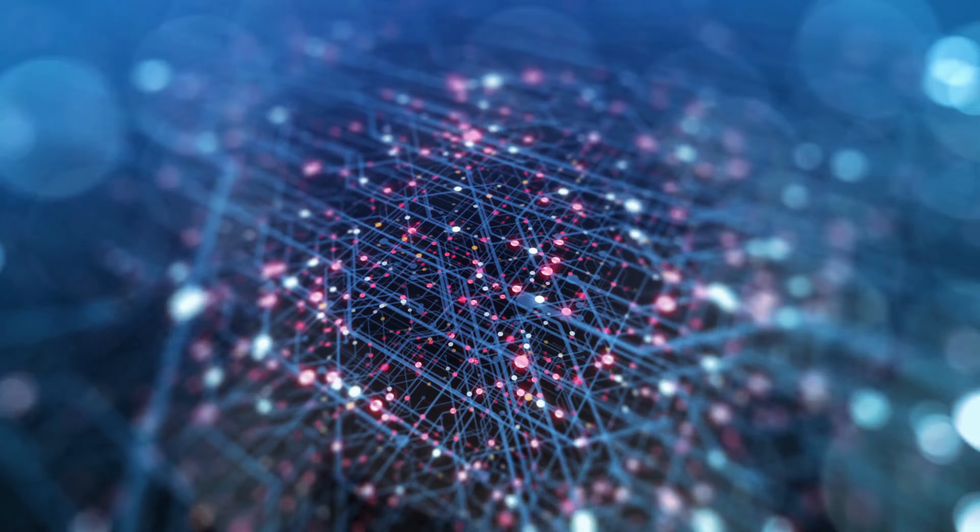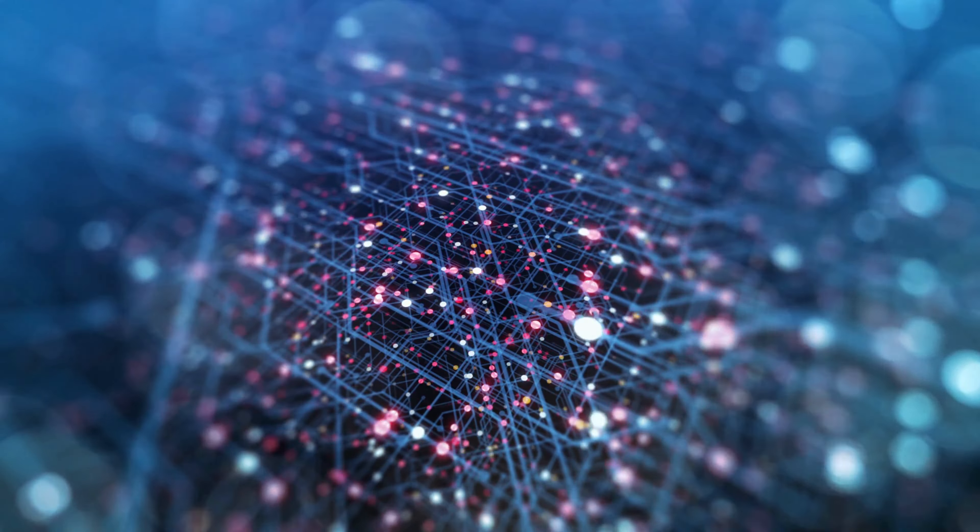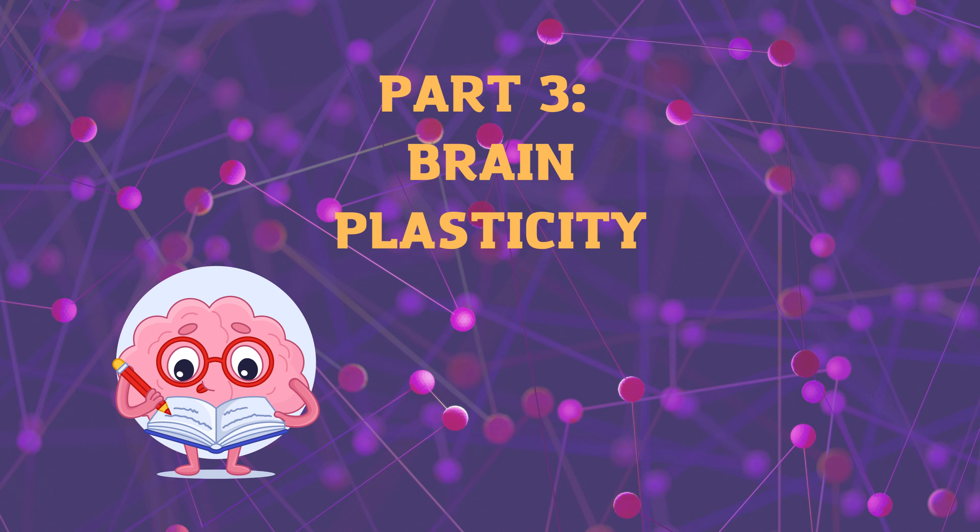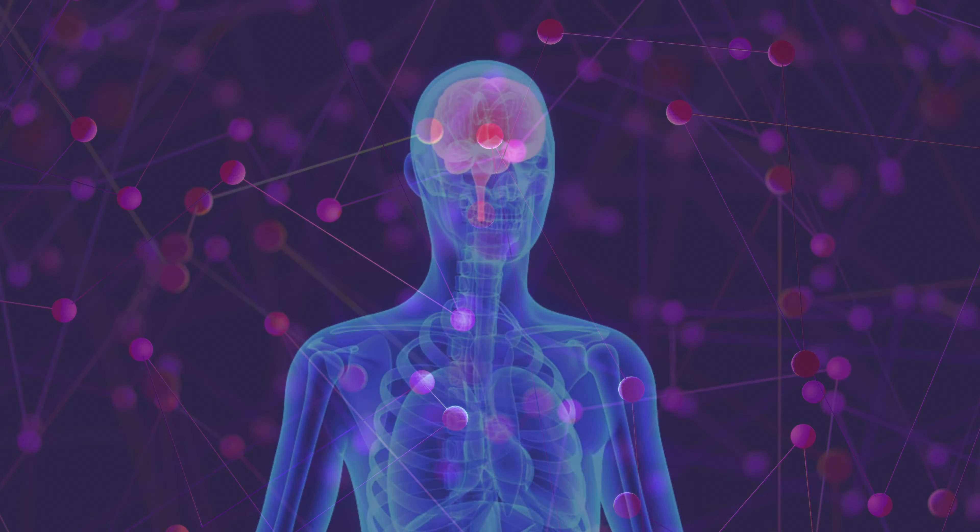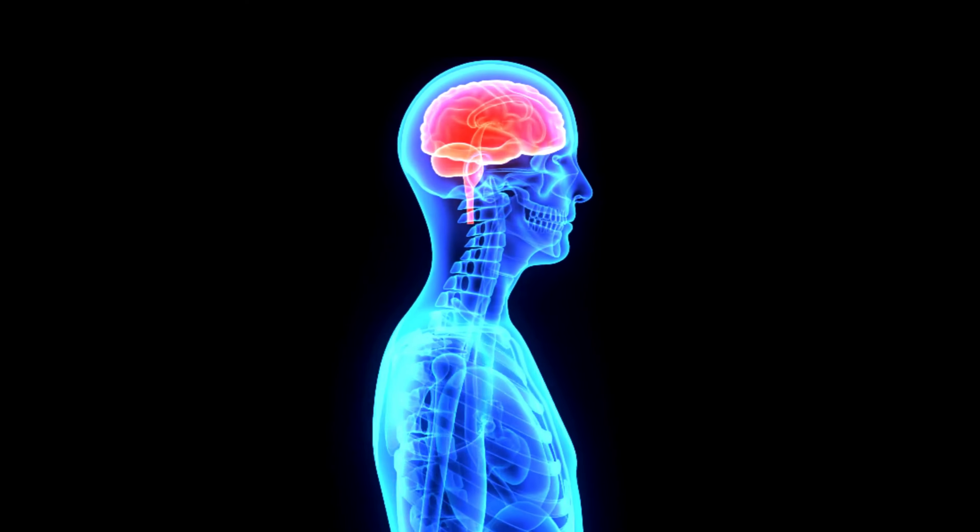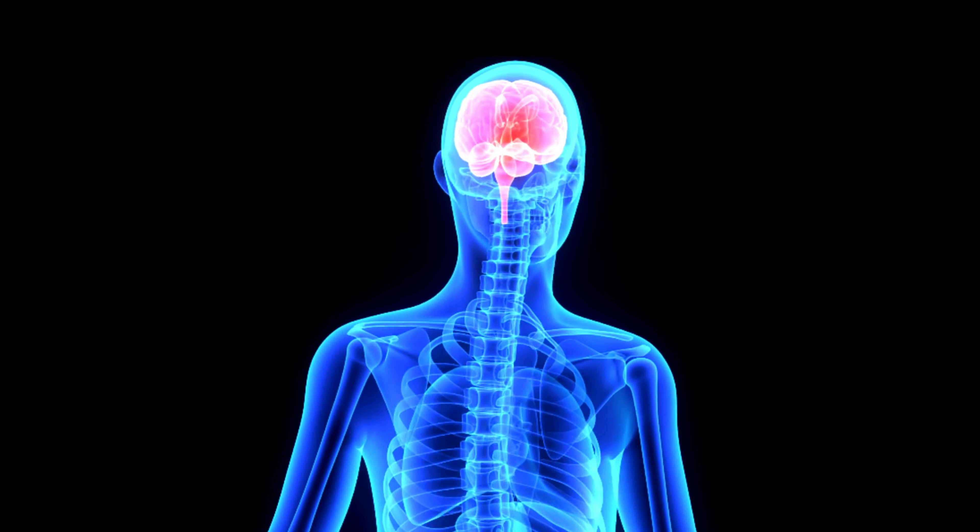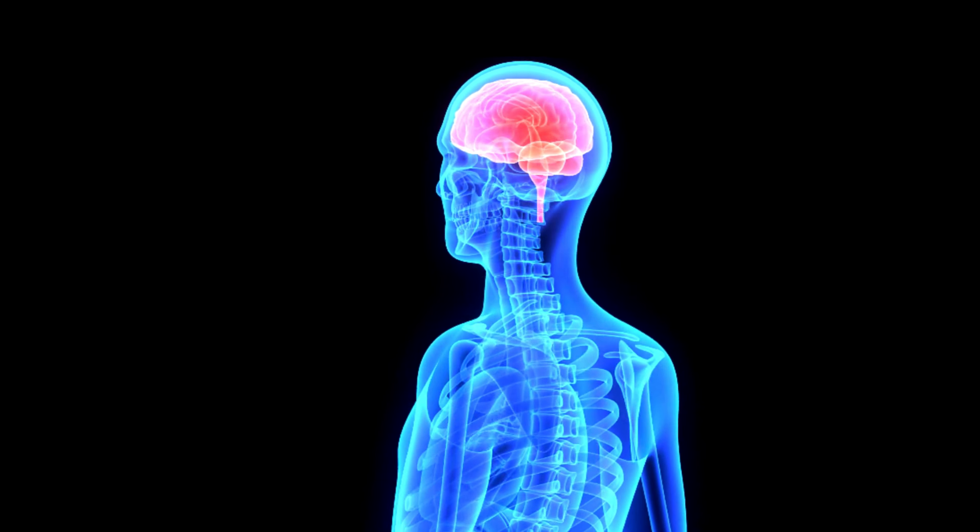When a neuron receives a signal, it generates an electrical impulse that travels down the axon. At the end of the axon, the impulse triggers the release of neurotransmitters, which cross the synapse and bind to receptors on the next neuron, transmitting the signal.